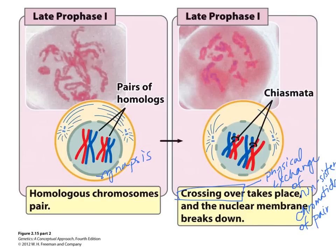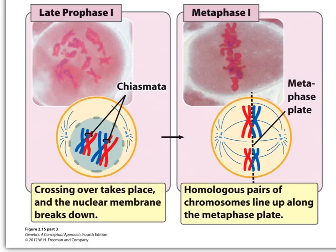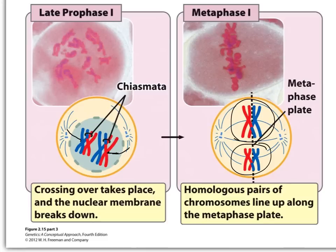This is important for ensuring the proper migration of homologous pairs to the metaphase plate. So we see those chiasmata in late prophase I. The mitotic spindle fibers are going to come in and hook to the kinetochores of the homologous pair, and move this whole homologous pair to the metaphase plate. You can see this homologous pair is aligned to the metaphase plate.